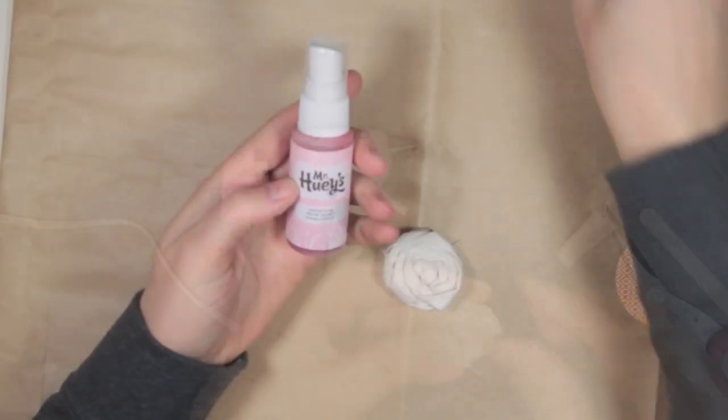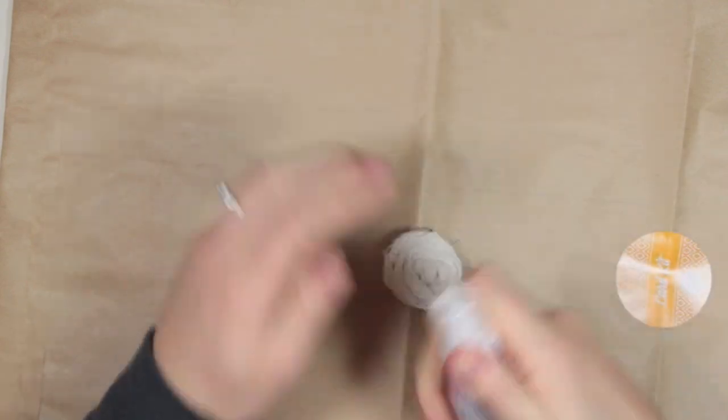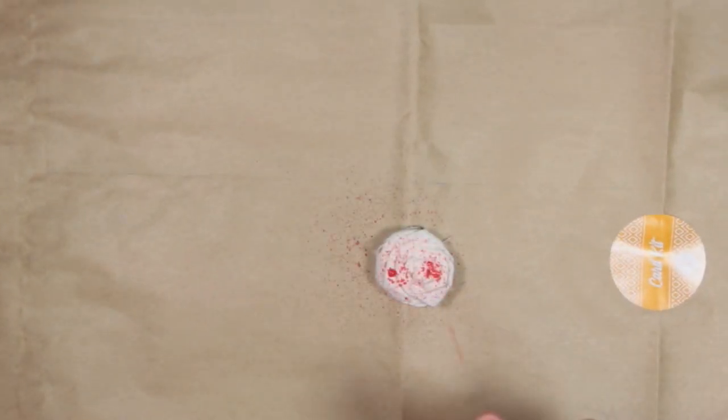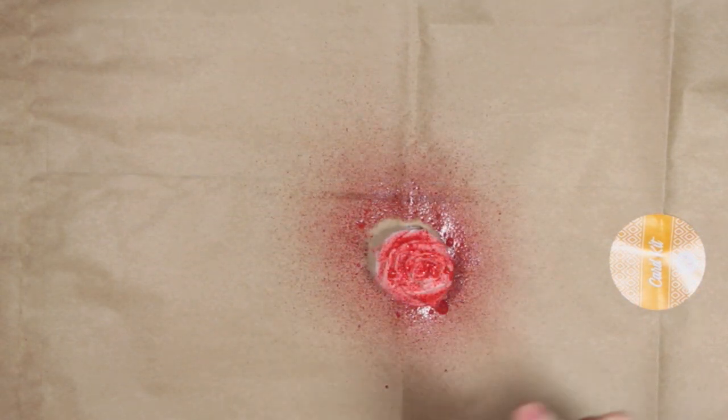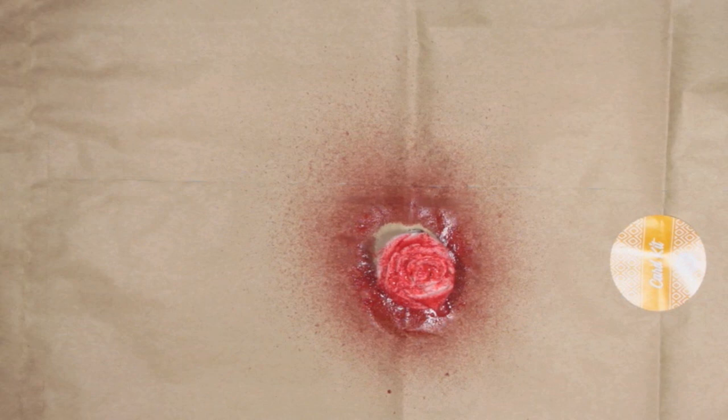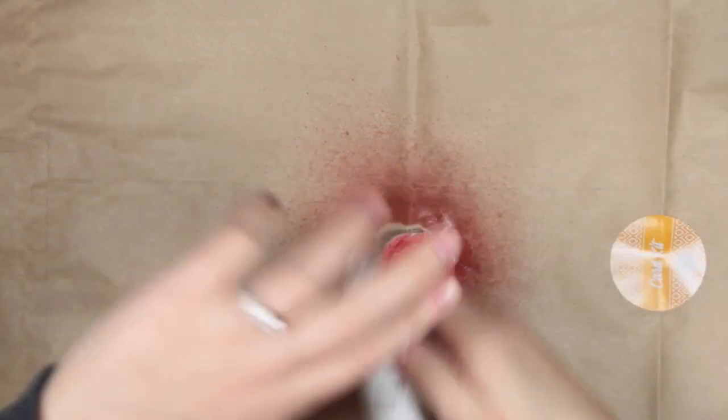Now I want to add a pop of color to these flowers, so I'm using some Mr. Huey's spray in sugar plum color. It appears a little darker than it will be once dry, but I added some white Mr. Huey's over the top to tone it down a bit.